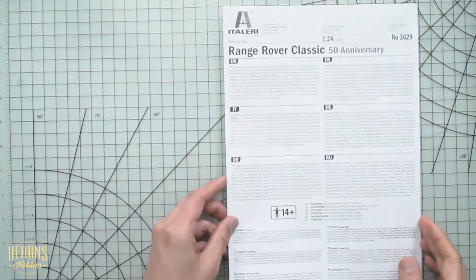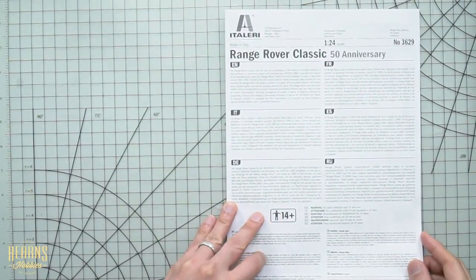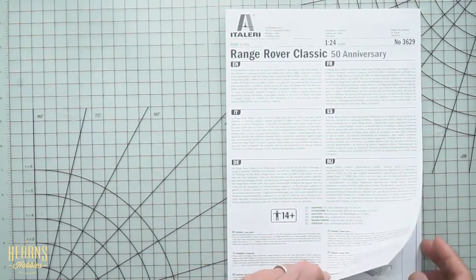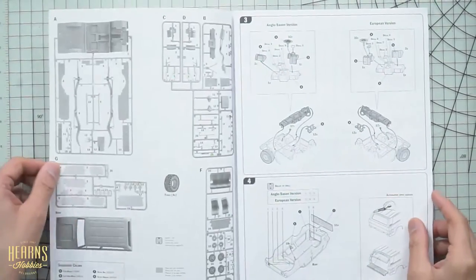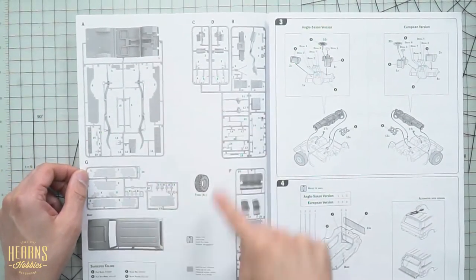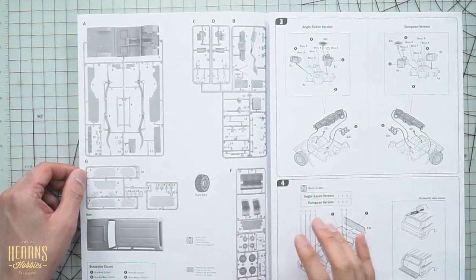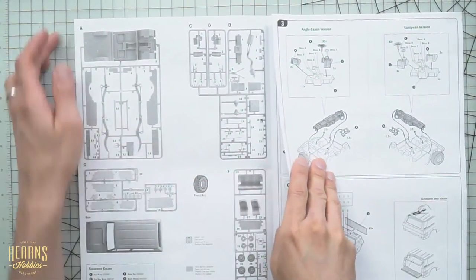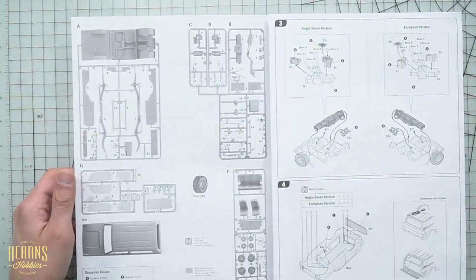Then we have the manual. The manual is actually quite big. We've got multiple languages on the front, gives a bit of a history on the car itself. We have the legend of all the parts so you can quickly check them off, make sure all the parts are there, and recognize where to find the parts as you're looking during your assembly. So we'll go to step one.